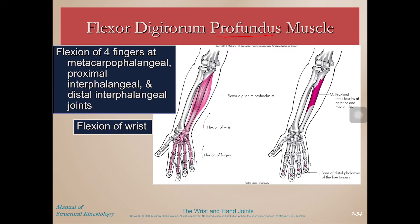Flexor digitorum profundus is deep to the superficialis and provides flexion of the four fingers at each of the three joints: the MCP, PIP, and DIP joints, as well as wrist flexion.